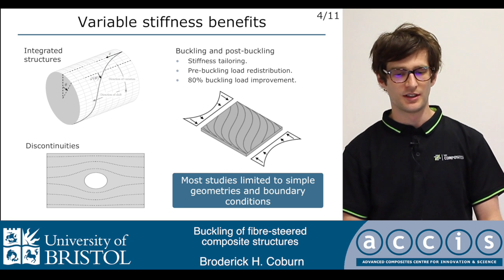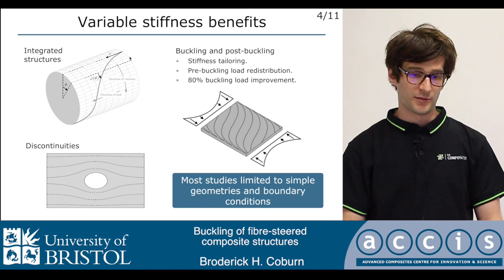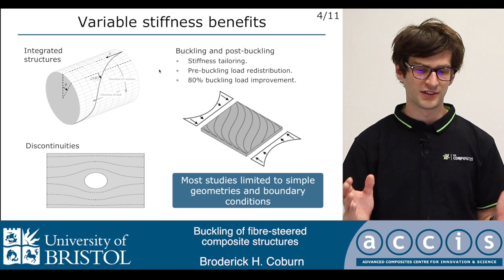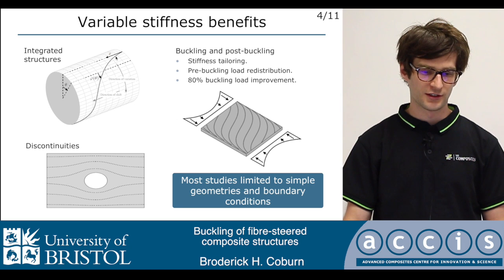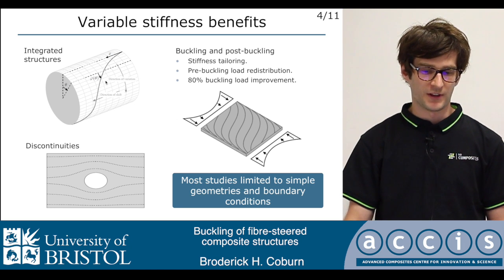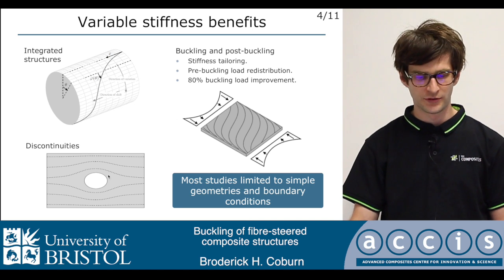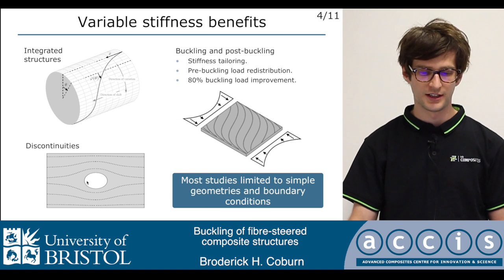Variable stiffness structures have been used for integrated structures. For example, this cylinder has zero degree fibres at the top and bottom and 45-degree fibres on the side. If this were a fuselage in bending, we'd get good flexural rigidity from the zero degrees at the top and bottom, and good shear resistance equivalent to a web in an I-beam. It has also been used around discontinuities — steering around a hole alleviates stress concentrations.